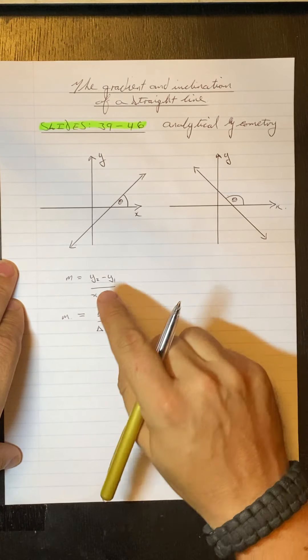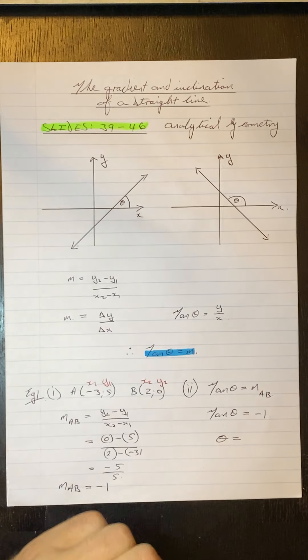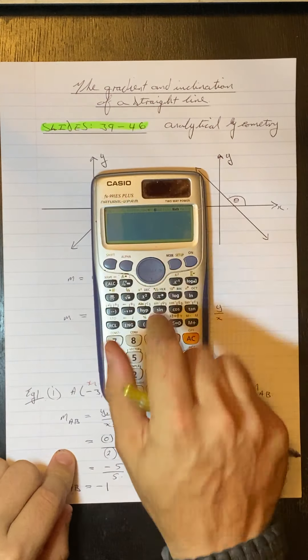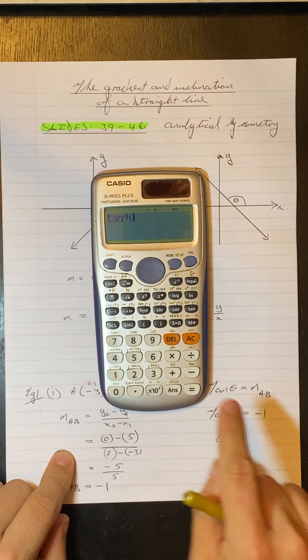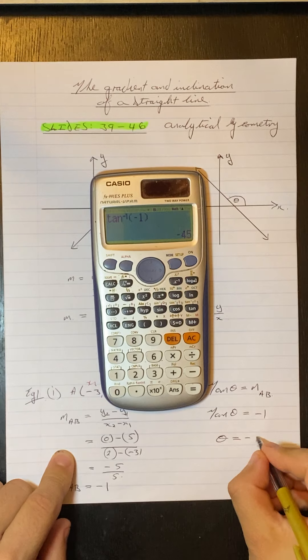Now, in order to work out an angle, remember what you do, grade 11s? You go on your calculator, shift tan minus 1. And I'll do it over here for you. So we go shift tan, make sure that you get that minus 1 there, of minus 1, and press equals. And we get an angle of minus 45.